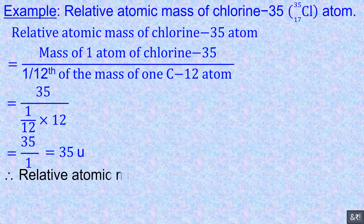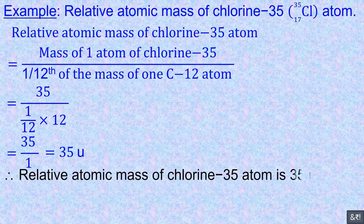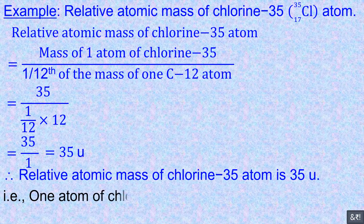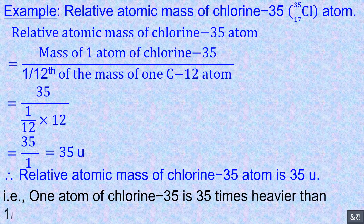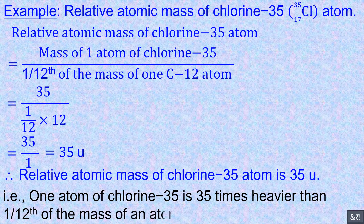Therefore, the relative atomic mass of the chlorine-35 atom is 35 U. That is, one atom of chlorine-35 is 35 times heavier than one twelfth of the mass of an atom of carbon-12.